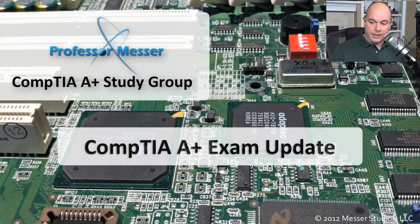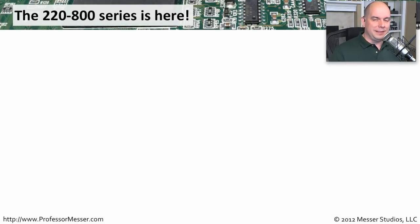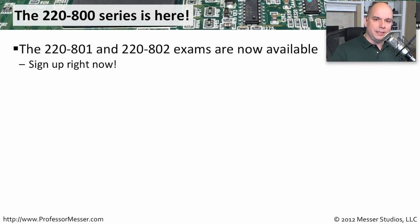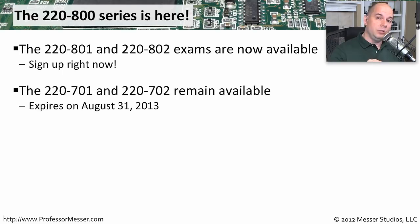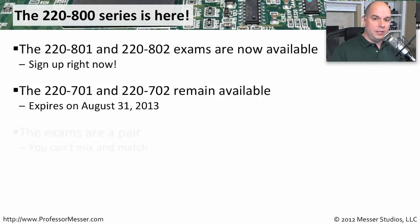I want to take a step back and think about what's happened with this exam. A lot has happened with A Plus in the last week or so. The brand new edition of the A Plus certification exam is now live — the 220-800 series. The 220-801 and 220-802 are exams you can take right now. If you've been studying for your 220-701 and 220-702, those were updated about two years ago and are still available. You've got a choice, but you have to make sure you pair them up correctly.